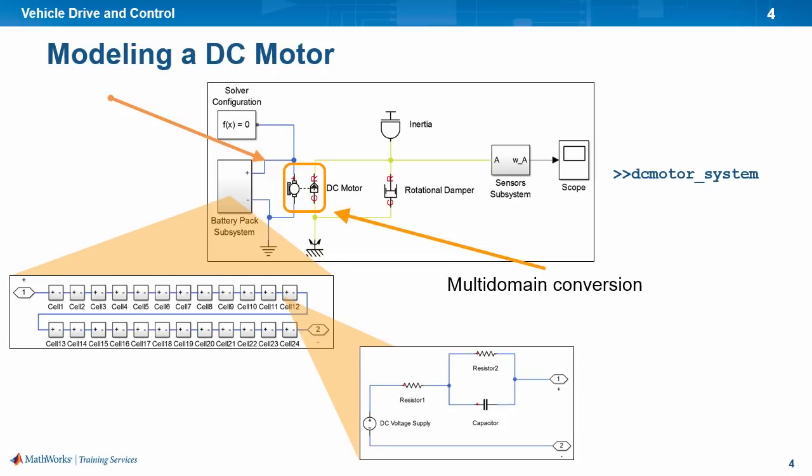One approach to controlling the DC motor speed would be to add a potentiometer to the line between the battery and the DC motor. However, this would lead to a rapid drain on the battery. Instead, we will use a pulse width modulation — that is a PWM controller. Let's see what PWM is.